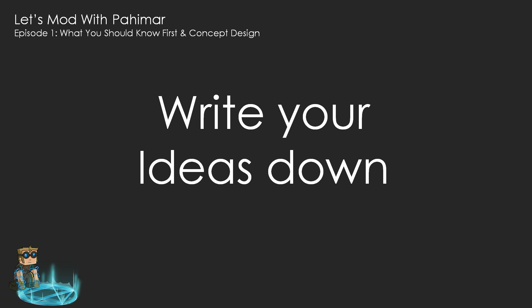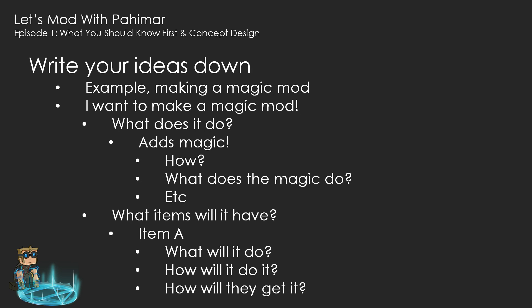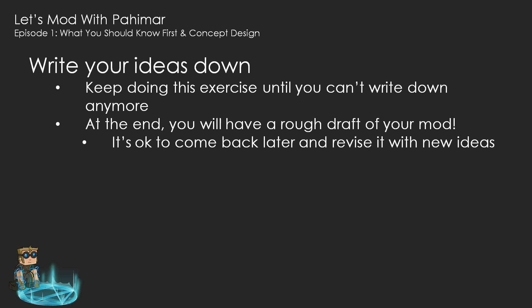Write your ideas down. Writing ideas down makes them concrete. Don't be technical — write them down like you would explain them to your mother or a small child. You can easily get lost in implementation details otherwise. Just keep it simple. Organize your ideas into chunks. Just like how programmers break big problems into smaller ones, break big ideas into smaller ones. This way, you can cover everything possible for your ideas, and you have something to reference later. For example, let's say I'm making a magic mod. I say to myself: I want to make a magic mod. Well, what does it do? It adds magic. How does it add magic? What does the magic do? What items will it have? What will each item do? How will it do it? How will the player get it? What unique mechanics will it have? Spells — okay, what spells? What makes them unique? Keep doing this exercise until you can't write anything else down. At the end, you'll have a rough draft of your mod and a basic understanding of what your design goals are going to be. It's okay to come back later and revise it with new ideas or new information learned over the course of your development.